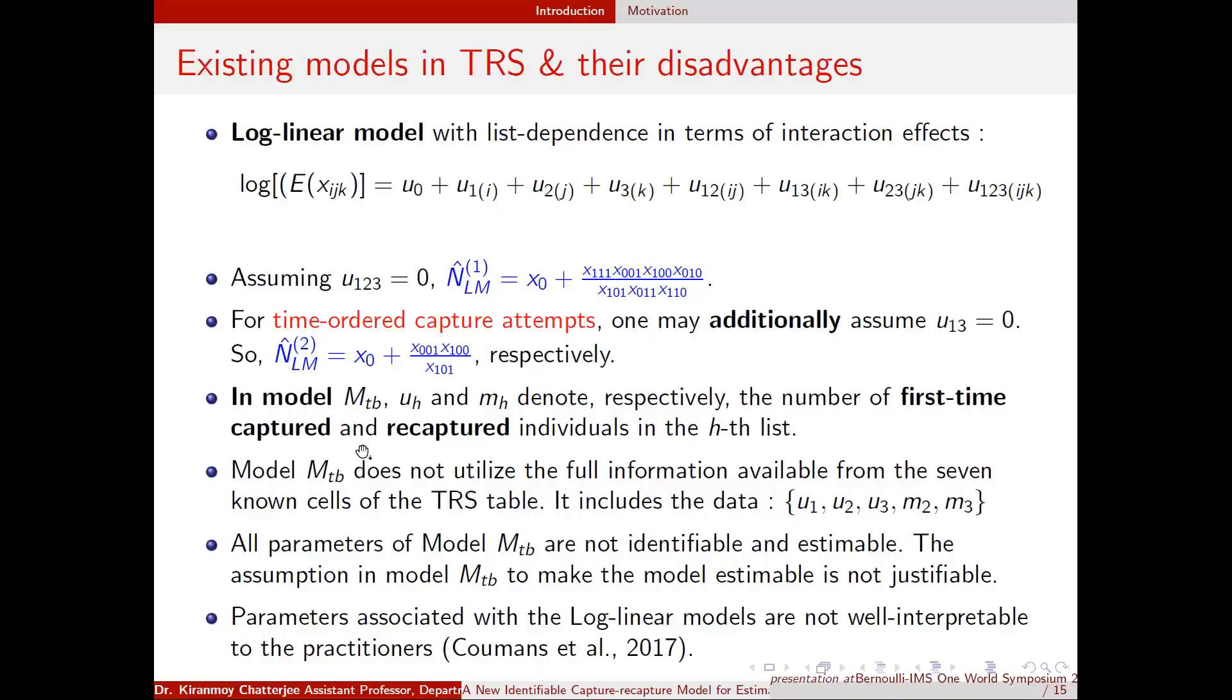Problem is that in the MTB data structure they only consider five data entries not the seven data entries. So five data entries does not give them much flexibility for the analysis. Another problem is that all parameters are not identifiable and estimable. That's why in model MTB they need some assumptions to make the model estimates but the assumptions are not justifiable in practice. Also in the log linear model the parameters are not really interpretable.